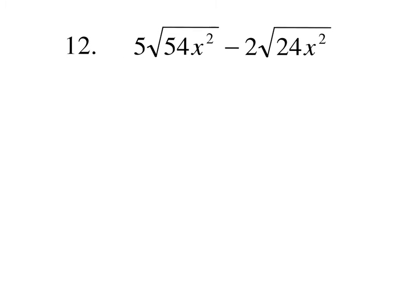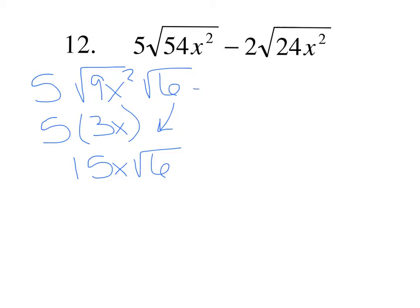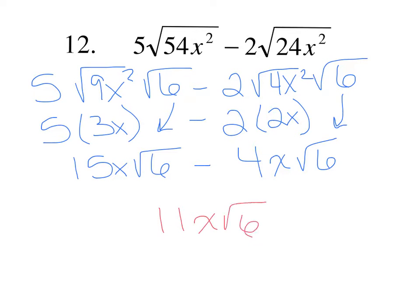On number 12 we have two terms. We have a 5 out front. 54 is 9 times 6 and x squared is perfect, so the square root of 9x squared is 3x; 5 times 3x is 15x, and the not-perfects give us square root of 6. For the second term, 24 is 4 times 6 and x squared is perfect, so the square root of 4x squared is 2x; multiplied by 2 gives 4x, and the not-perfects give square root of 6. Now we have like radicals: 15x minus 4x gives 11x square root of 6.